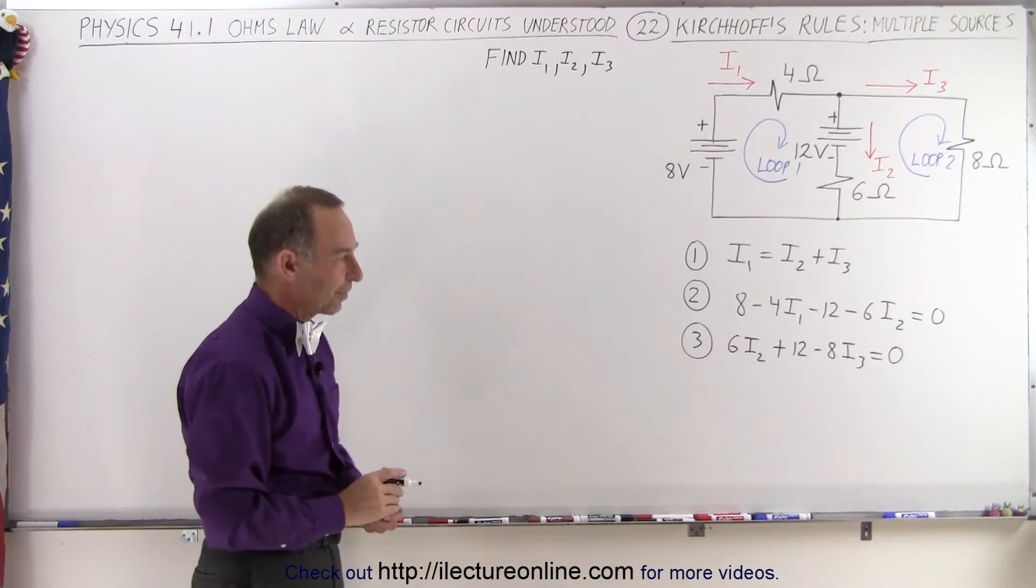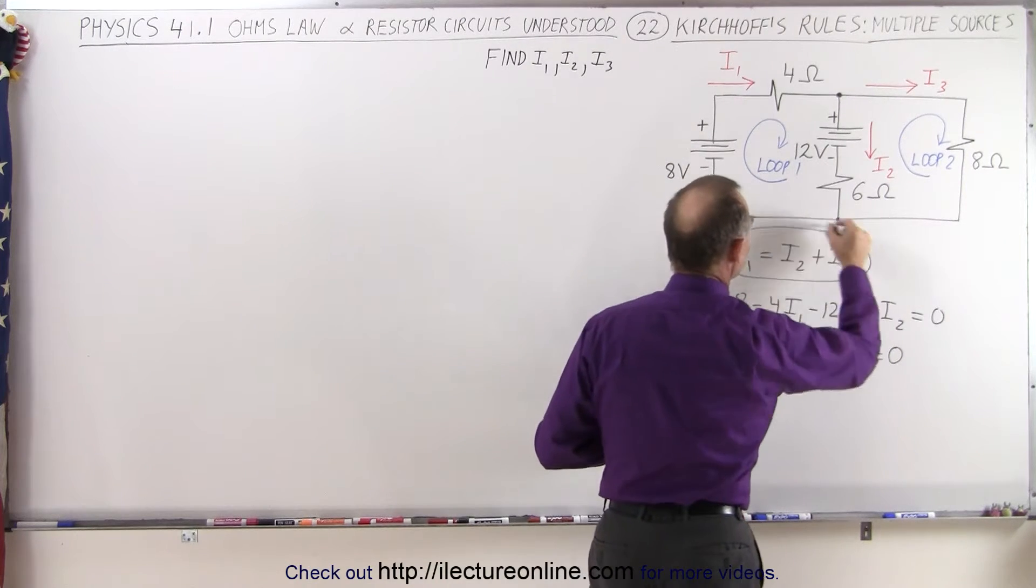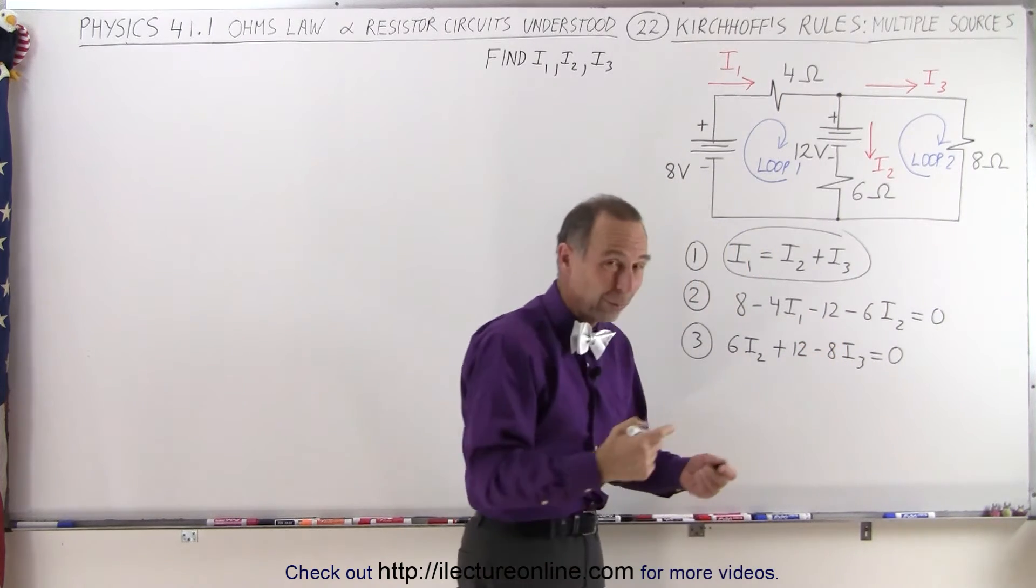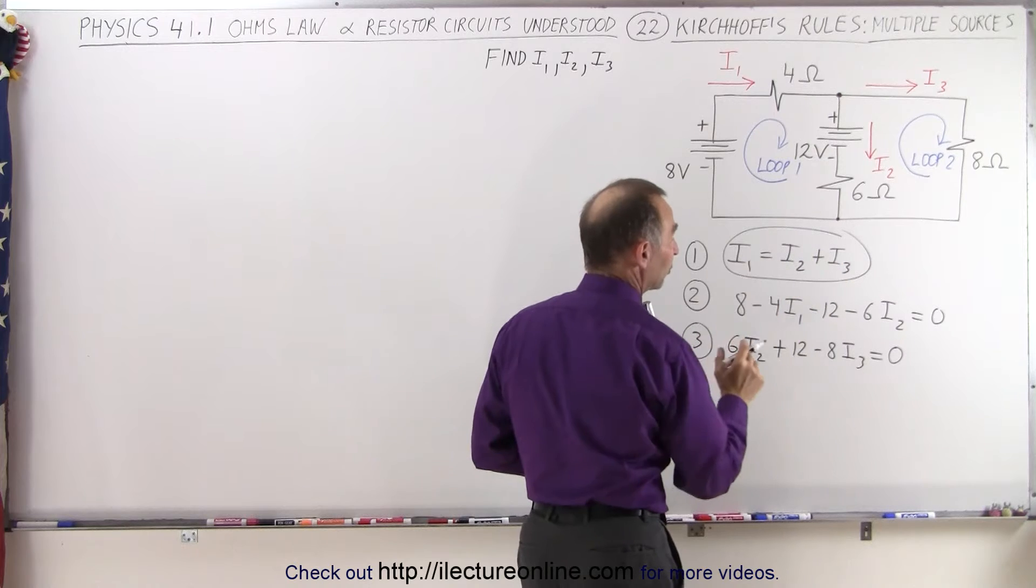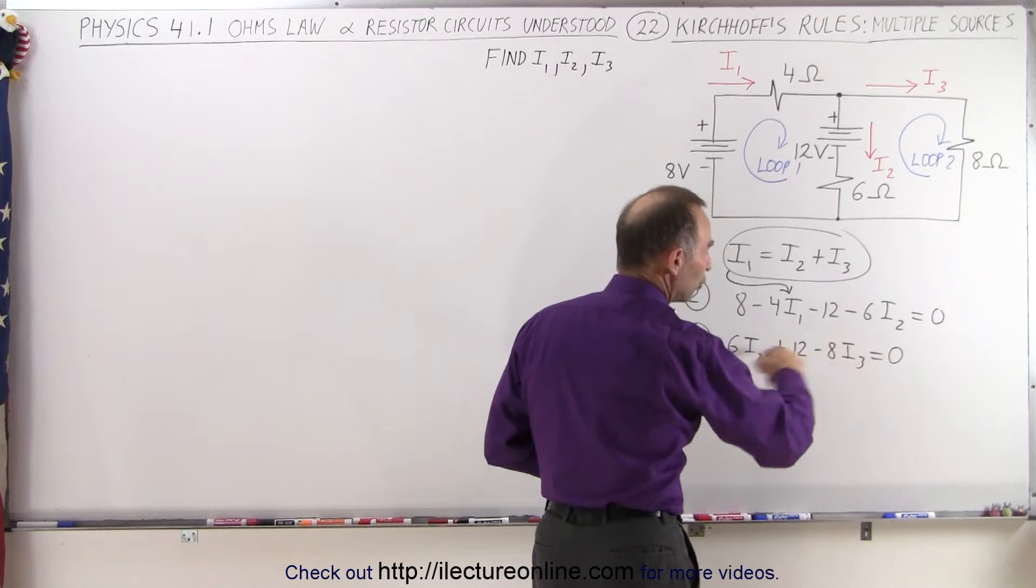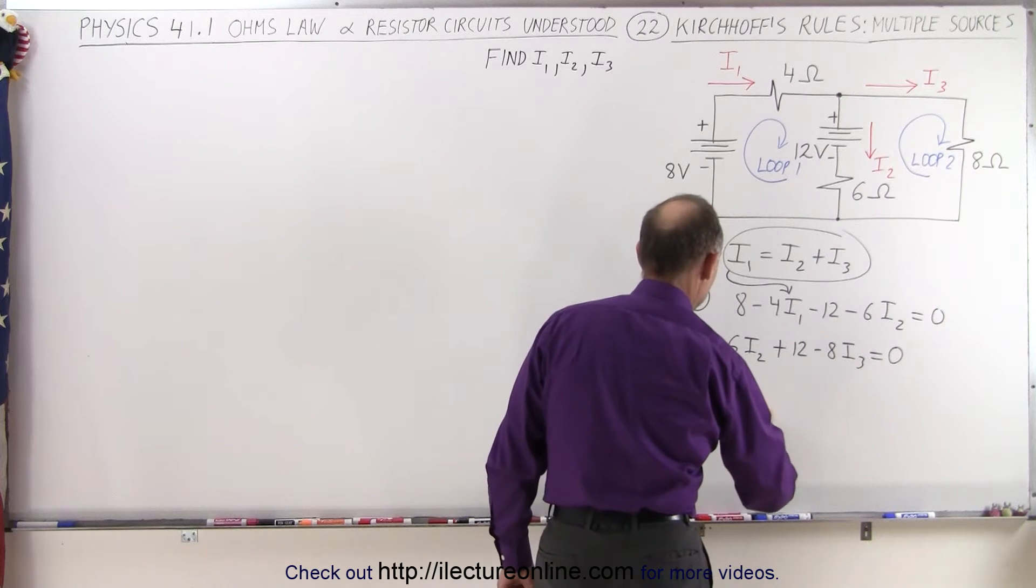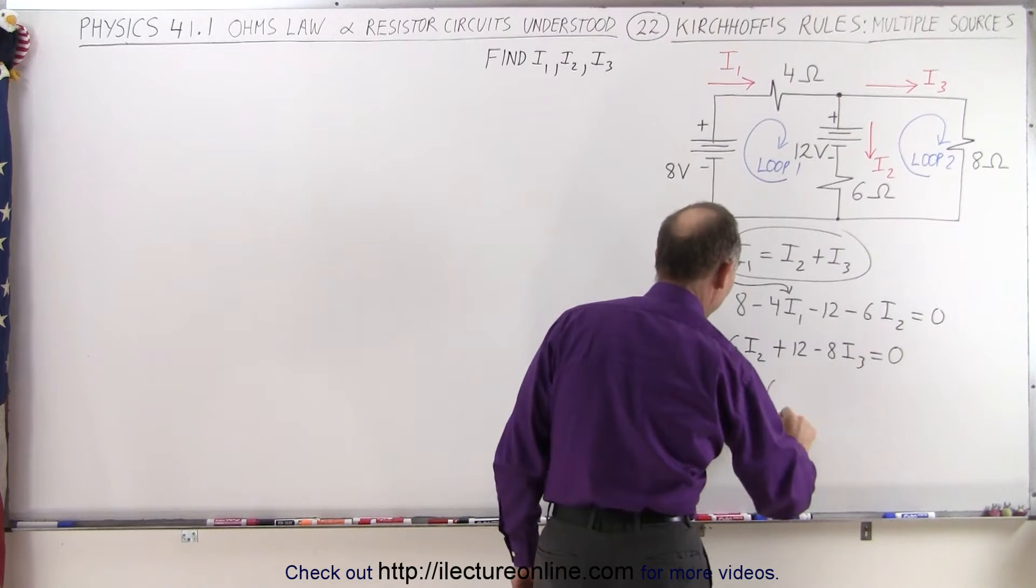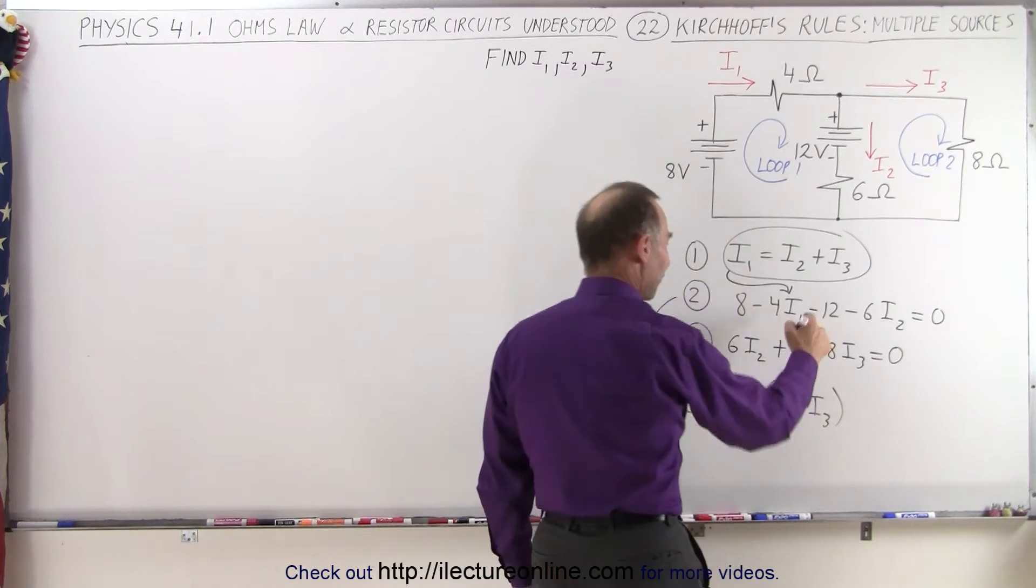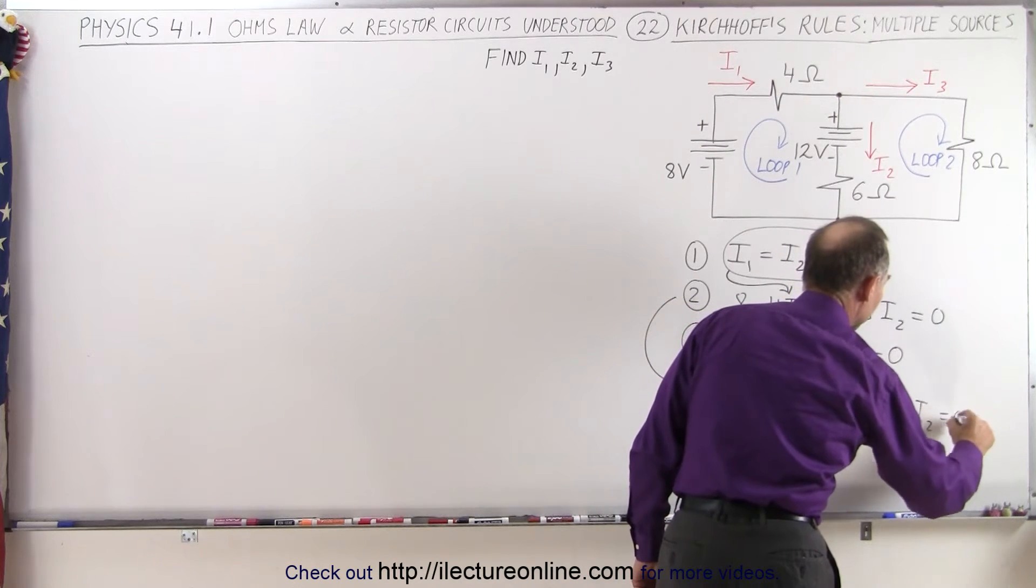What do we do next? The next step will be to take our first equation. And since it's already solved for I1, we're going to replace I1 in this equation and I1 in this equation with what I1 is equal to. Notice we only have to do it for one equation, for this I1 right there, because there's no I1 in this equation. So the second equation now changes to eight minus four times I1, but I1 is the same as I2 plus I3, like this. So we have minus 12 and minus 6I2 is equal to zero.